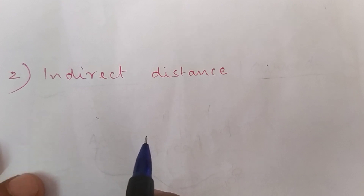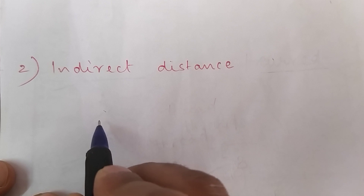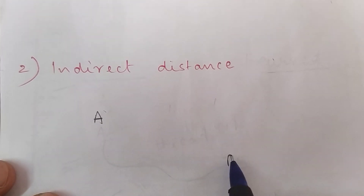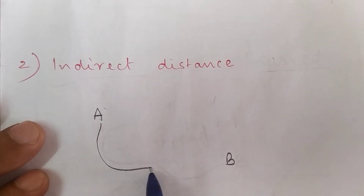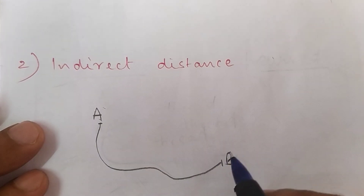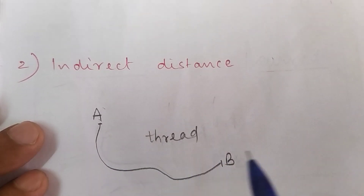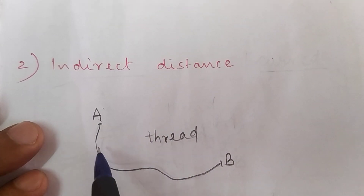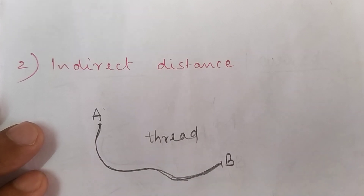The second way of measuring distance on the topographical map is indirect distance. For example, suppose a road is joining points A and B in a curved path. This we have to measure with the help of a thread along the metal road — the metal road is shown with two red lines.